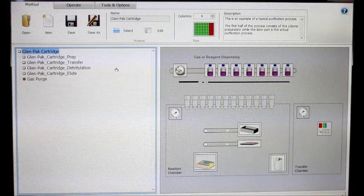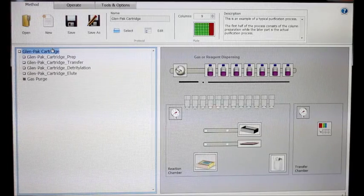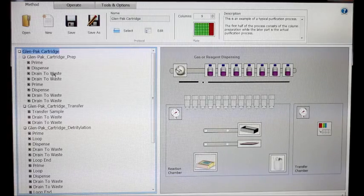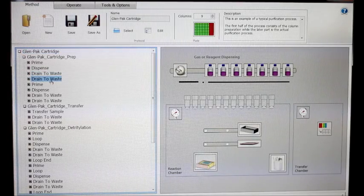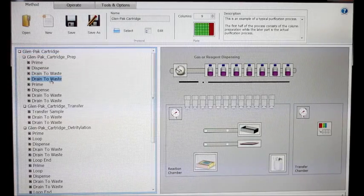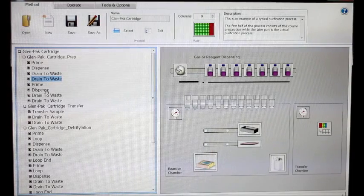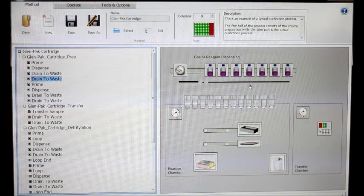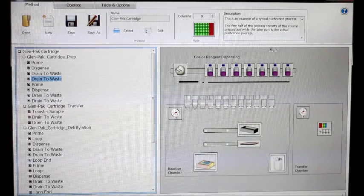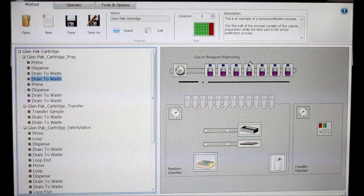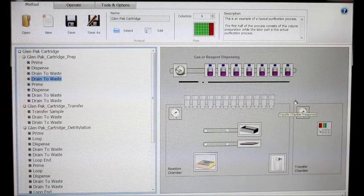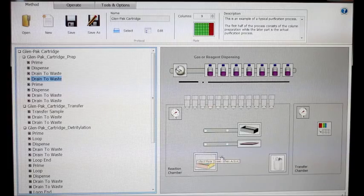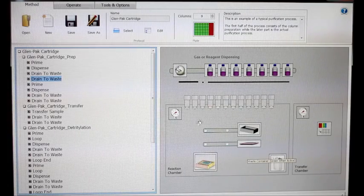The left-hand side of the screen is the extended protocol view where you can see a step-by-step view of the process and which step it's on. During the process, the instrument will actually show you which step it's on by highlighting and moving on each step. The right-hand side of the screen is a graphic interface where you can actually see which reagent it's dispensing at a given time along with which valve is actuated at a given time. The bottom half of the screen shows where plates are in the reaction chamber at any given point during synthesis.